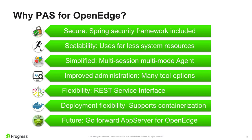Another benefit of PASOE is our recommended best practice approaches for implementing REST service interfaces using the new web handler transport that PASOE supports. We'll talk more about that on the next slide. PASOE also supports deploying to Docker containers — already available since the OpenEdge 11.7.4 release — with many benefits for pre-production and production use. And perhaps last but not least, PASOE is the go-forward app server for OpenEdge. All future investment in the app server is going to be on PASOE, so there are many reasons to move to it if you haven't already.